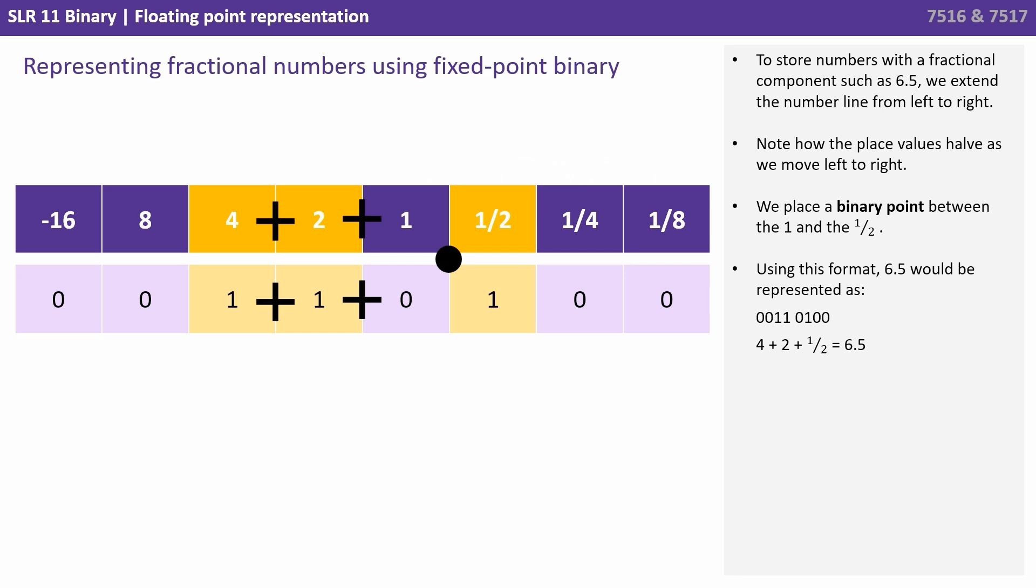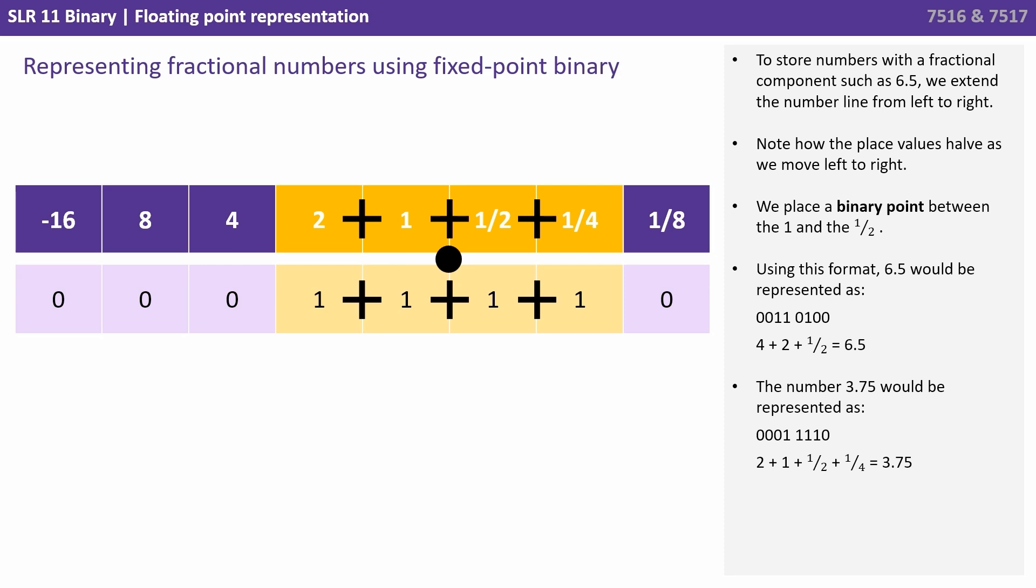Using this format, 6.5 would be represented as 00110. A 4 plus a 2 plus a half is 6.5. The number 3.75 would be represented as 00011110. A 2 plus a 1 plus a half and a quarter, 3.75.